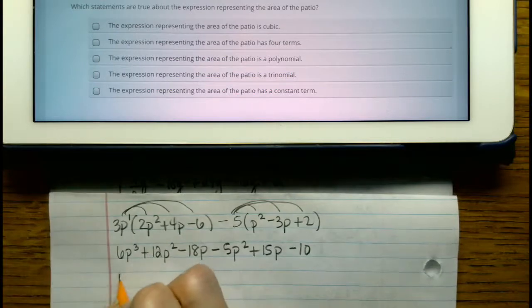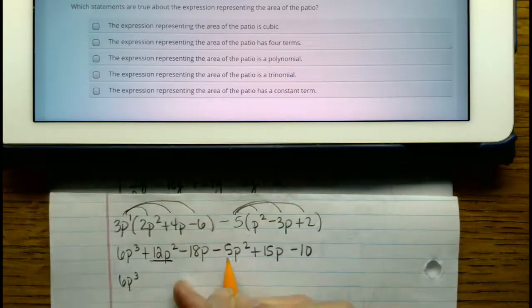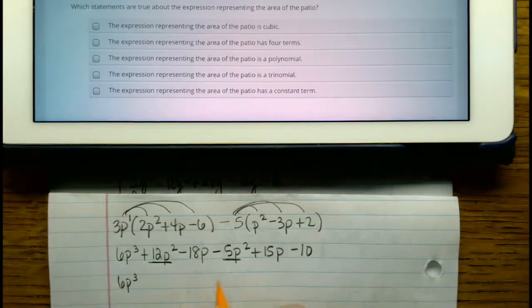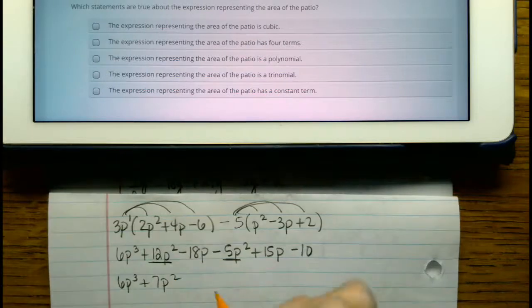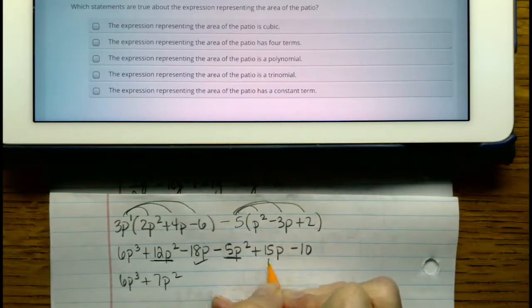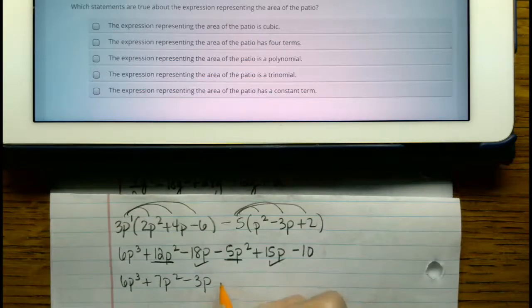And when we combine like terms, there's nothing like with the 6p cubed, but we have 12p squared minus 5p squared is 7p squared. Negative 18p plus 15p is negative 3p, and then we've got the minus 10.